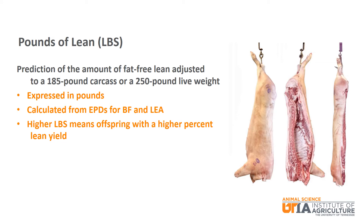Pounds of lean or LBS is a prediction of the amount of fat free lean adjusted to a 185 pound carcass or a 250 pound live weight. It is expressed in pounds. The pounds of lean EPD is calculated from EPDs for back fat and loin eye area. A higher numerical value for pounds of lean means offspring with a higher percent lean yield.